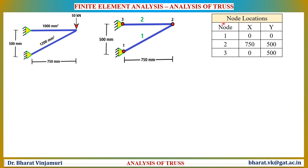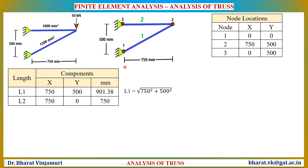Once the node locations or coordinates are determined, the next step is to determine the length of the elements. The length of element number 2 is directly given as 750 mm. To find the length of element 1, we use the Pythagorean theorem, which gives us a length of 901.38 mm.